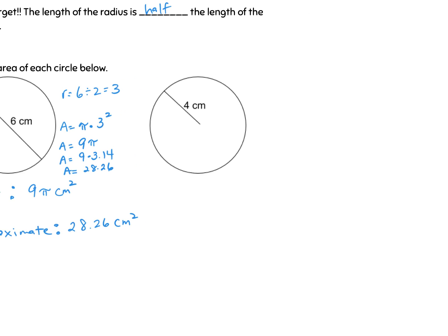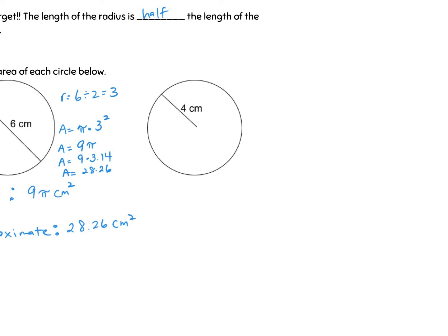Okay let's go ahead and try the next one. This one the radius is already given to us. So I'm just going to use the four. So for my exact that's what I'm going to start with. I have pi times four squared. Again that's not four times two it's four times four. So we have pi times 16. I can rewrite that as 16 pi. So my exact measurement is 16 pi centimeters squared.